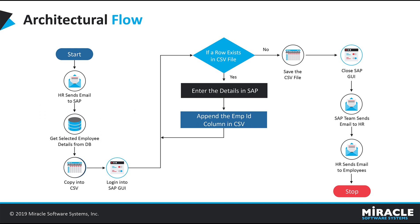Here is the architectural flow. Initially, the HR team sends an email to the SAP team — this is all part of the automation process. When the SAP team receives the email, they get details from the database, copy them into a CSV file, and log on to SAP GUI. The robot checks if an error exists in the CSV file. If so, it enters the details in SAP and appends the Employee ID column at the end of the CSV file. If no error exists, the robot saves the CSV file and closes SAP GUI. Finally, the SAP team sends an email to the HR team confirming the work is done, and the HR team sends emails to selected candidates indicating their onboarding process is successfully completed — all done automatically by the robot.